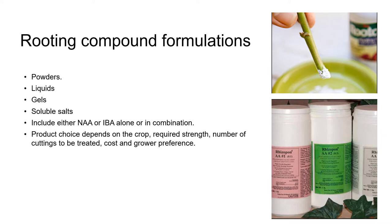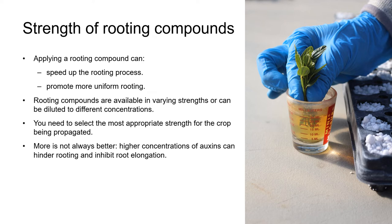Some growers absolutely love Hormex, which is a powder, while others, including myself, really like liquid compounds such as Dip and Grow. Depending on the species we're propagating, the application of a rooting compound isn't always necessary. However, it can speed up the rooting process and promote more uniform rooting, which can both compensate for the additional labor cost of applying rooting compounds. Rooting compounds are available in ready-to-use formulations in varying strengths, or you can buy them as concentrates and then dilute them to the required strength. It's important to remember that using a higher strength or more product than is necessary isn't always better, because higher concentrations of auxins can inhibit root elongation.